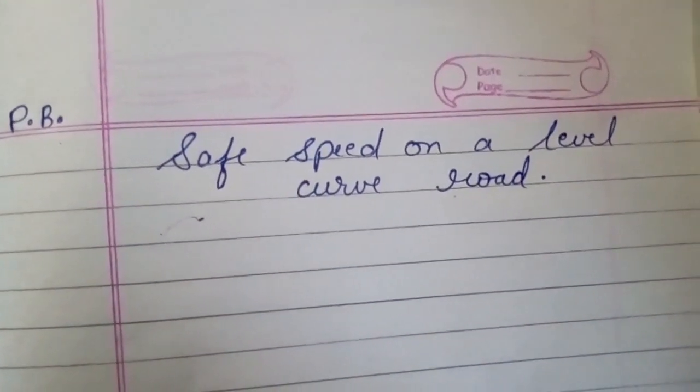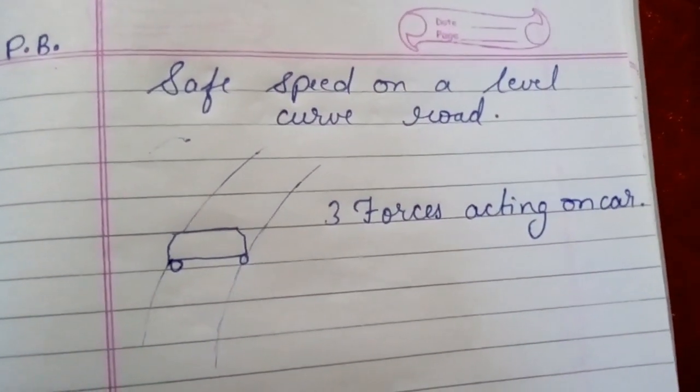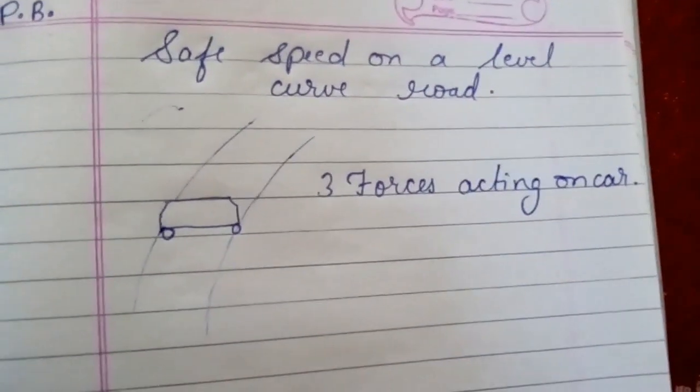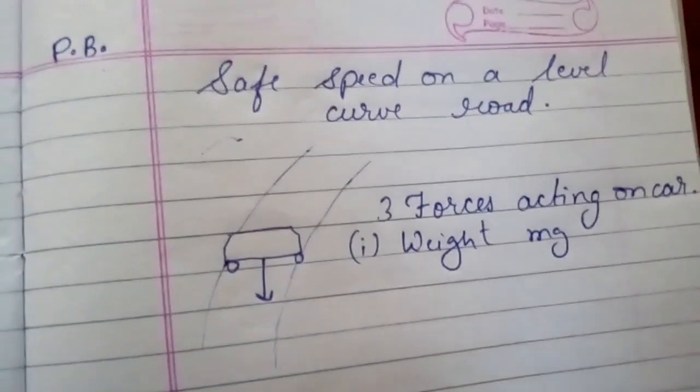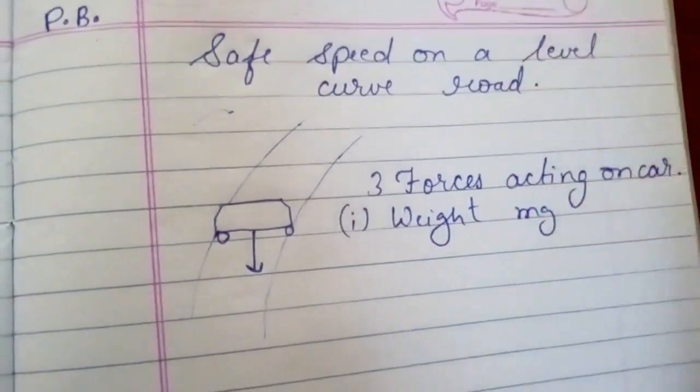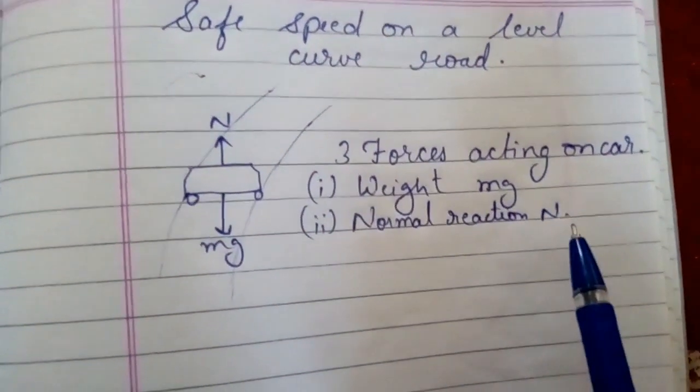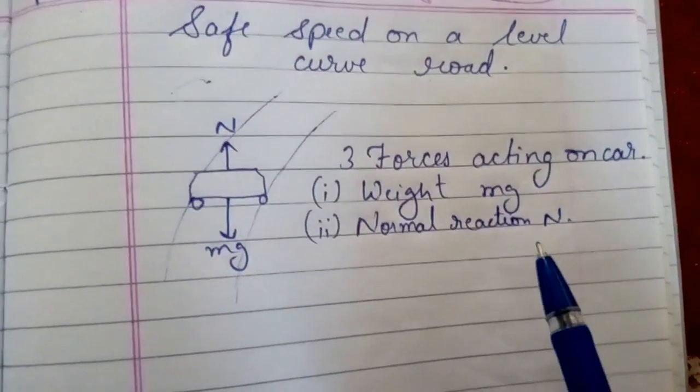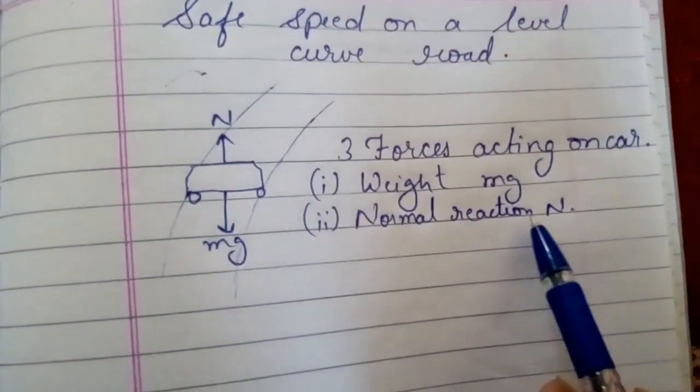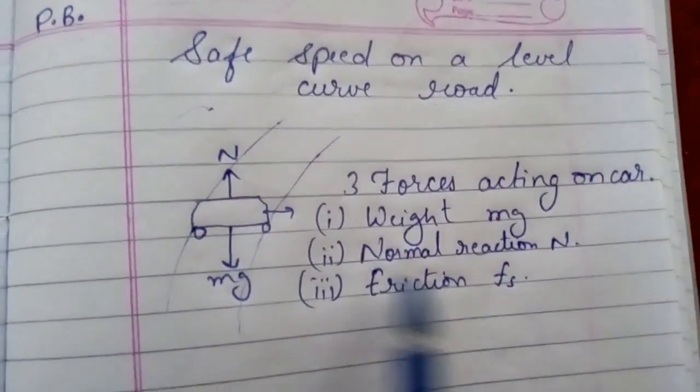It is extremely easy. As the car is moving on a level curved road, three forces are acting on it. First one is weight of the car vertically downward, equal to mg. Second one is normal reaction N which arises due to the weight of the car.